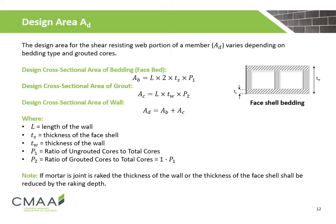The design area for the shear-resisting web portion of a member, AD, varies depending on the bedding type and grouted cores. The total design cross-sectional area of the wall comprises two components: the design cross-sectional area of the bedding and the design cross-sectional area of the grout. Where L is the length of the wall; Ts is the thickness of the face shell; Tw is the thickness of the wall; P1 is the ratio of ungrouted cores to total cores; and P2 is the ratio of grouted cores to total cores.